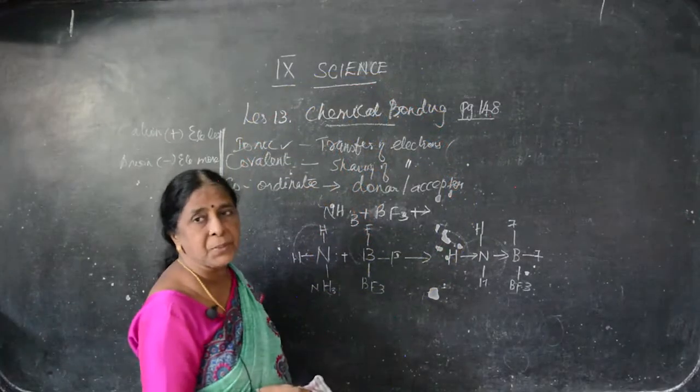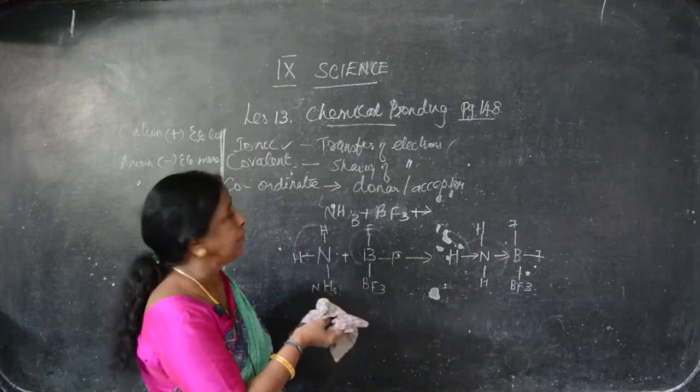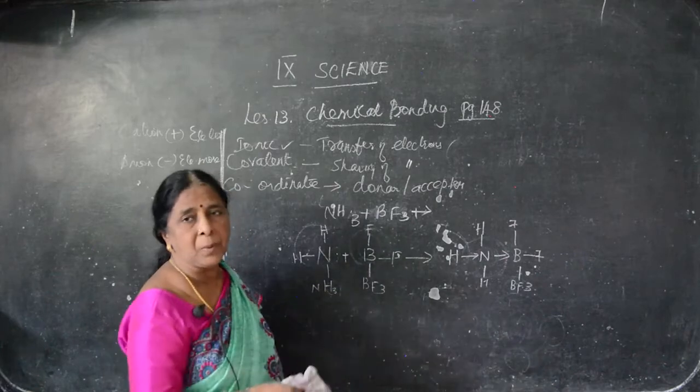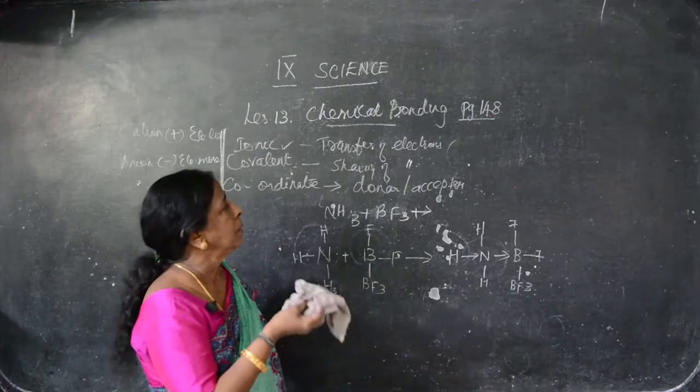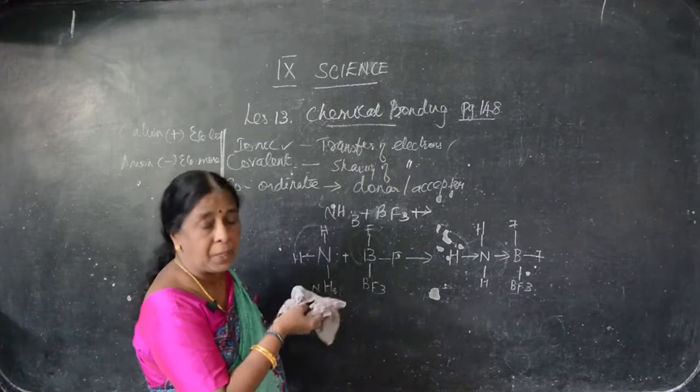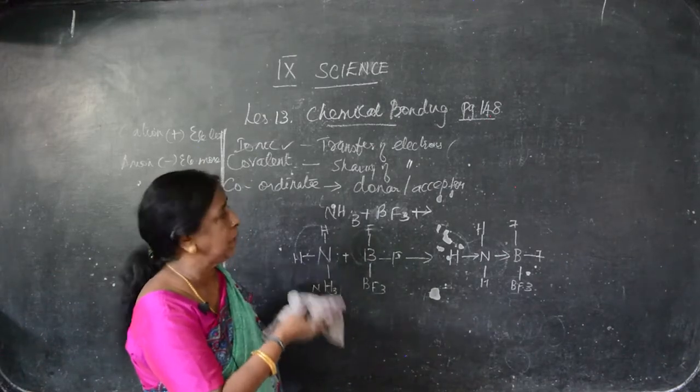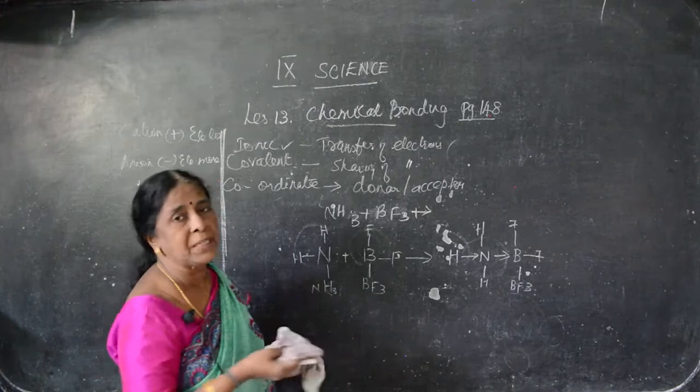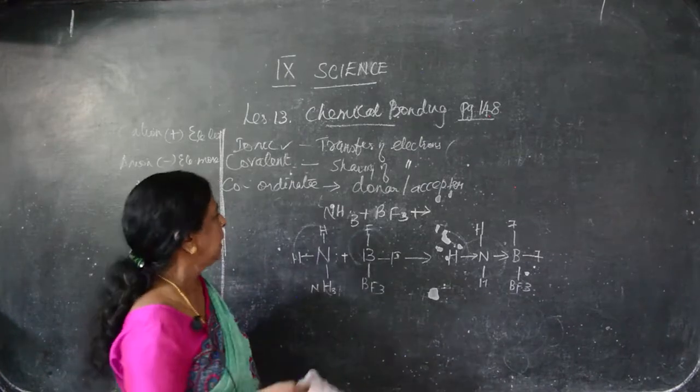Okay children, let me continue. Already we have seen covalent bond, next ionic bond, covalent bond and coordinate covalent bond.